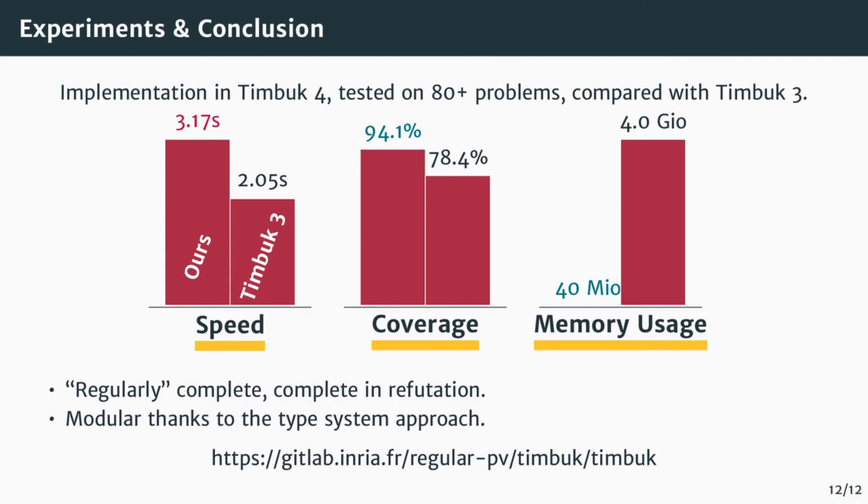However, in the subset of problems on which we could compare, our implementation could handle 16% more problems without timing out. Surprisingly, the greatest improvement is in the memory usage, where in the worst case, Timbuk 3 would consume several gigabytes of memory to solve some problems, where we never got past 40 megabytes. This is mostly due to our modular type system approach that allows us to split the problem into smaller parts.